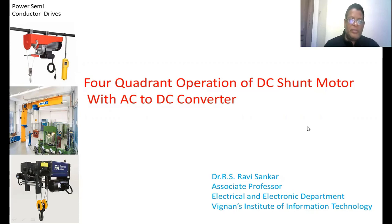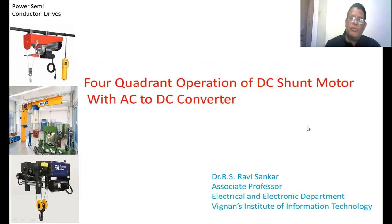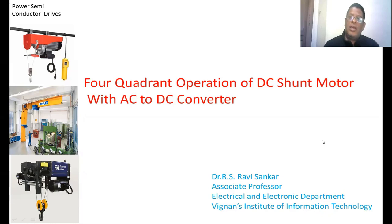An AC to DC converter is nothing but a rectifier. If we connect a fully controlled converter between the motor and the supply, it gives only a two quadrant operation — it does not give four quadrant operation. To achieve four quadrant operation, we use a dual converter. The dual converter consists of two fully controlled converters connected anti-parallel to the load, which enables four quadrant operation for the DC shunt motor.